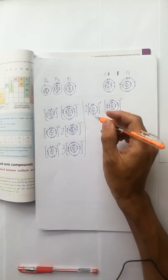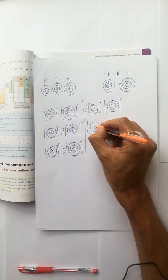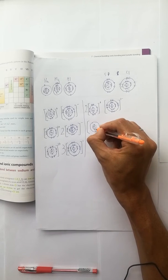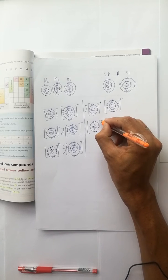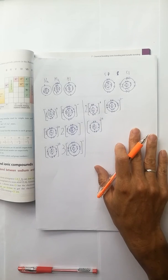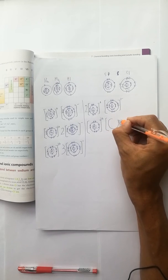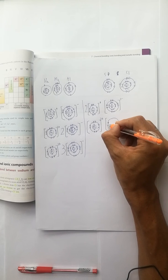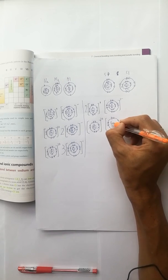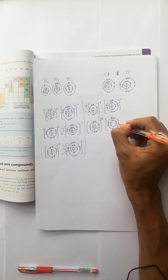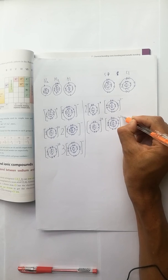So magnesium loses two electrons, after this it is Mg²⁺, and sulfur accepts the two electrons and changes to S²⁻.